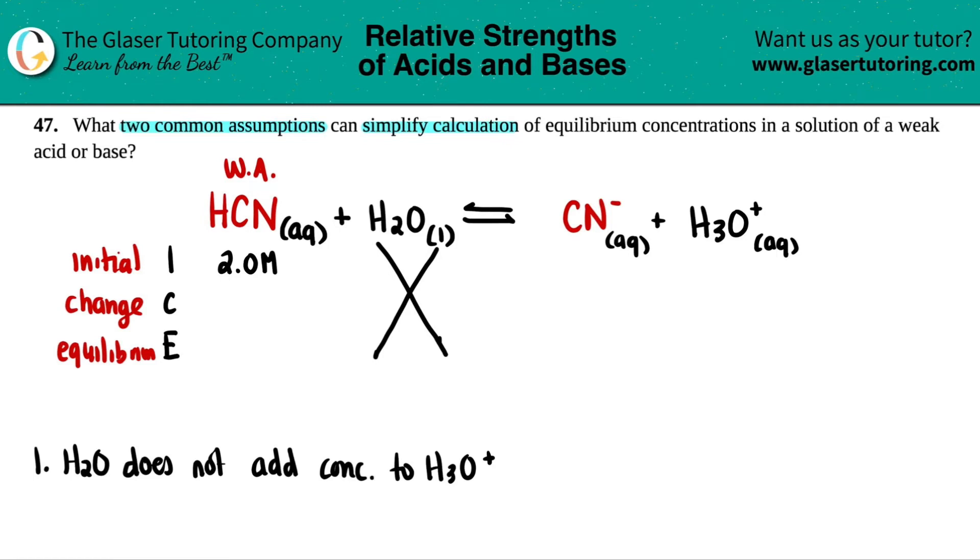Now, the next one comes from your change in equilibrium parts over here. If we only started with HCN, we didn't initially start with CN minus or H3O plus. So that would be zero. If you didn't start off with anything, the only way up is literally up. You can only go up from there. So you could only add amounts to your product side. So plus and plus, and that means that you can only subtract from your amount that you have.